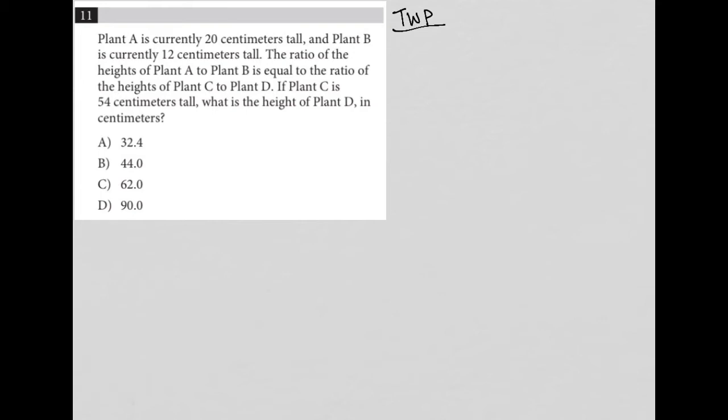The question says plant A is currently 20 centimeters long. So I'm going to stop there and just say A and put under it 20 cm. And plant B is currently 12 centimeters tall. So I'm going to say B over here and say 12 centimeters. I'm paying attention to this word current as well. So this row is kind of like the current height of these plants.